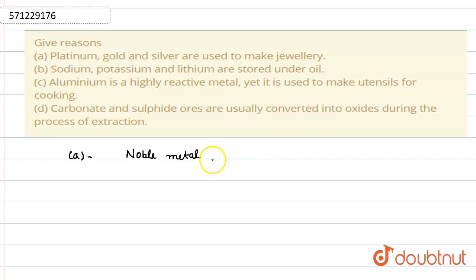That's why they are used in making jewelry, so the jewelry becomes long-lasting. Next: Sodium, potassium, and lithium are stored in oil because these are very reactive elements. Because of their reactivity, they easily react with moisture or oxygen. That's why they are stored in oil.